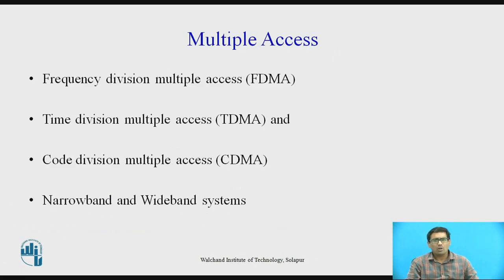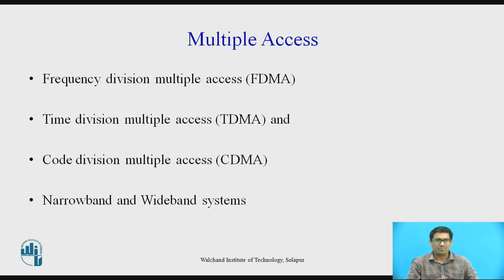Introduction to Multiple Access. Frequency Division Multiple Access (FDMA), Time Division Multiple Access (TDMA), and Code Division Multiple Access (CDMA) are the three major access techniques used to share the available bandwidth in a wireless communication system. These techniques can be grouped as narrowband and wideband systems, depending upon how the available bandwidth is allocated to users. The duplexing techniques of a multiple access system are usually described along with the particular multiple access scheme.